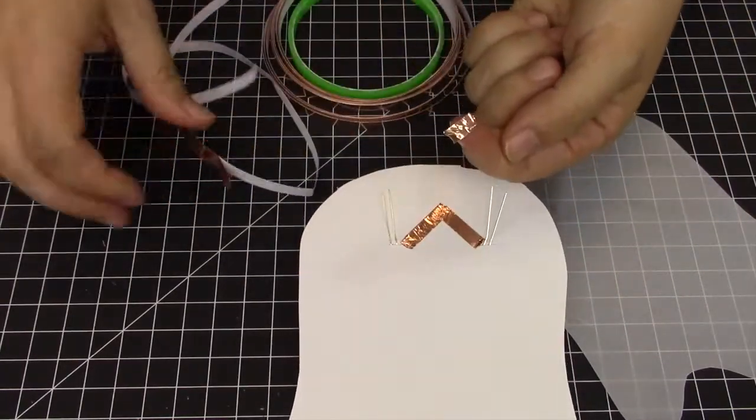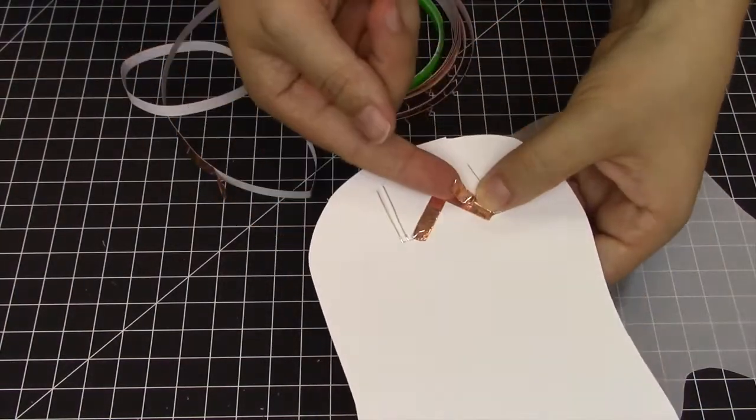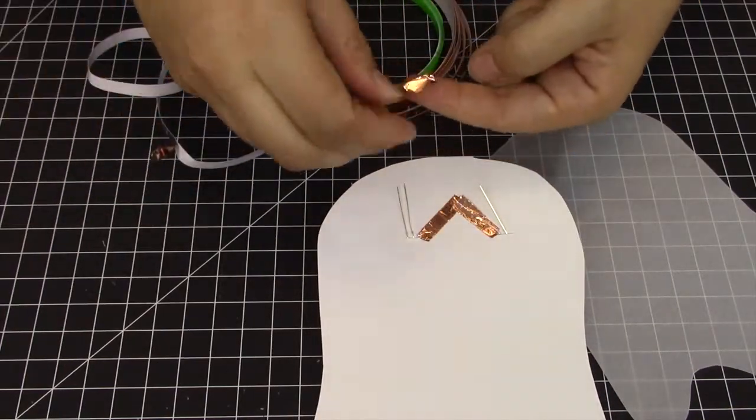Then take a small piece of copper tape and bend the long LED leg over the copper and make a copper sandwich. Repeat this for the other long LED leg.